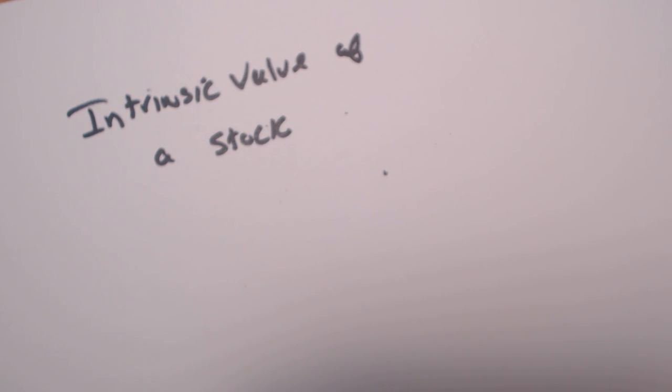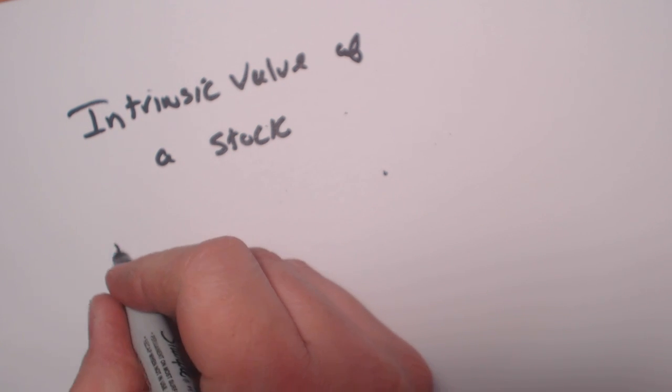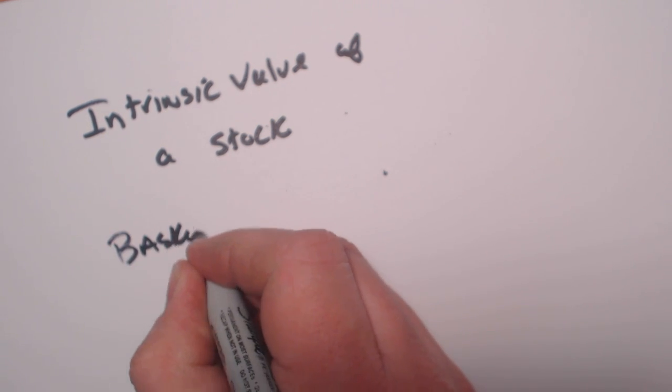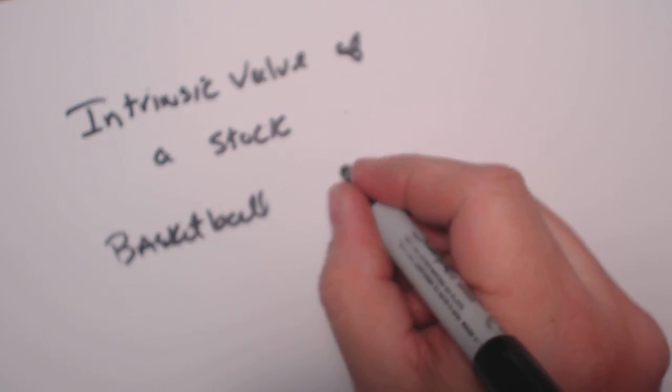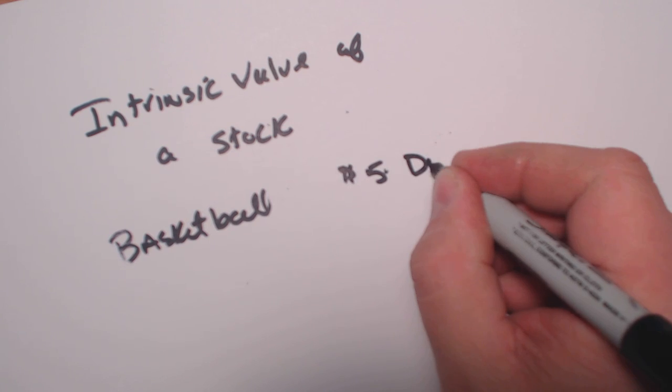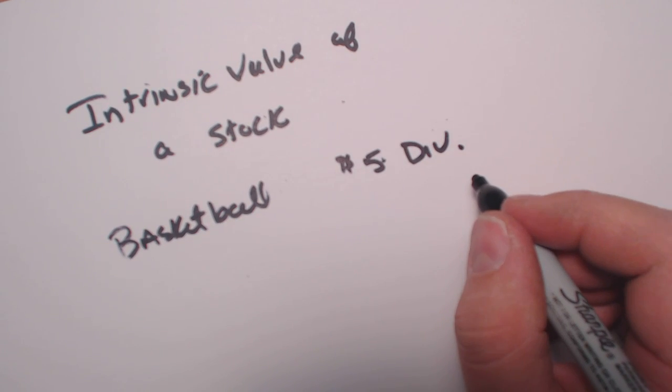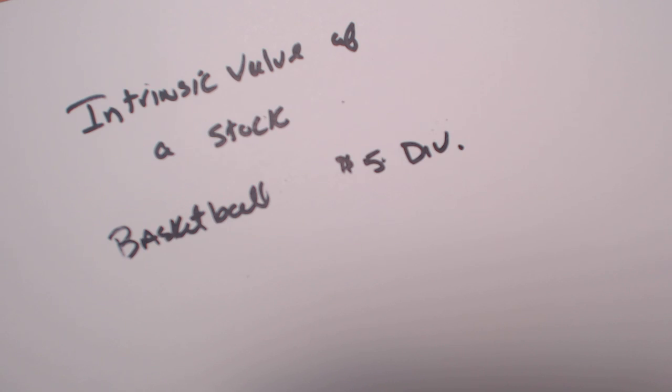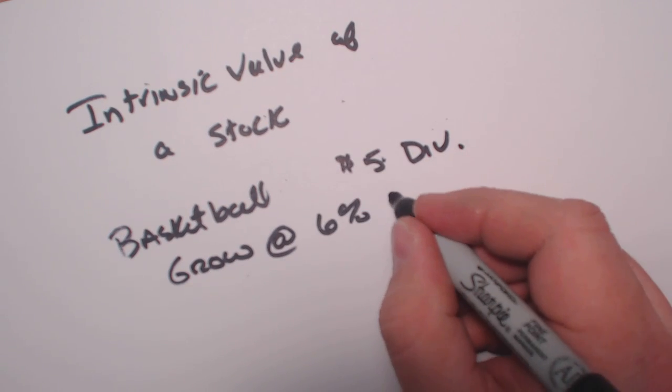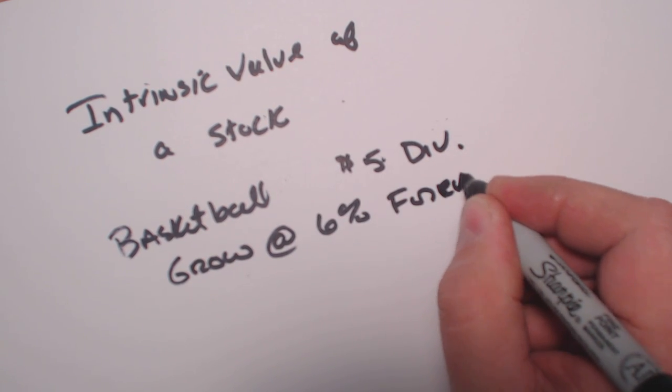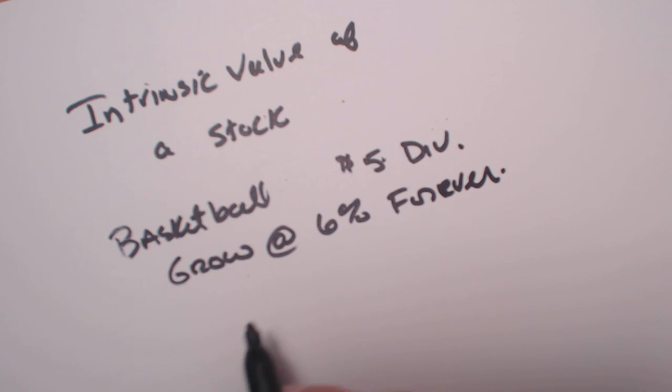Let's set this problem up. We're going to be looking at a company called Basketball. The Basketball company has been paying a $5 dividend, and it's expected to grow from this point on at 6% forever. This is an important part - forever, not by year, but forever.